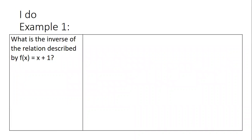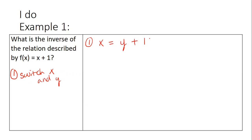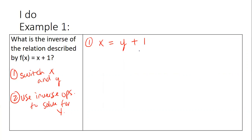Let's review some algebra one things. What is the inverse of the relation described by f(x) = x + 1? Step one, when we're trying to find the inverse, we switch the roles of our independent and dependent variable — basically switch x and y. So where f(x) is, it now becomes x. Where x is, it now becomes y. Step two, we're going to use inverse operations to solve for y. The inverse operation here is subtraction. What I do to one side, I do to the other, and I'm left with x minus one equals y.